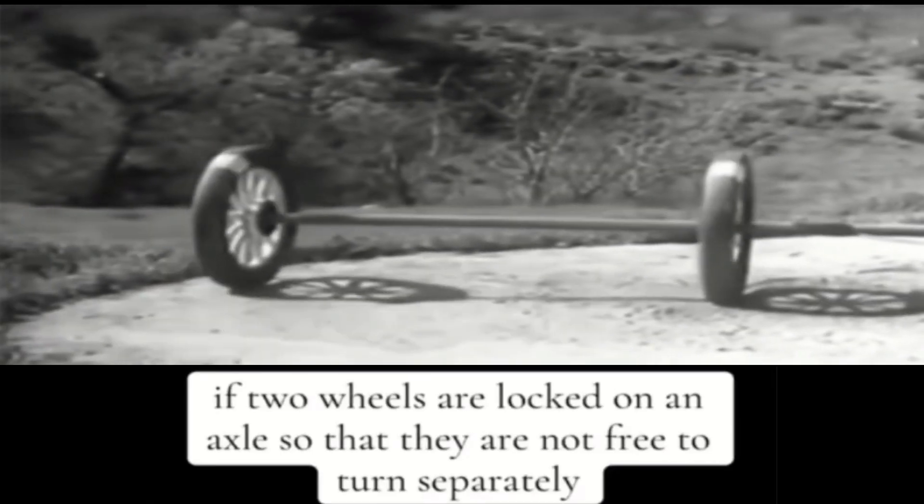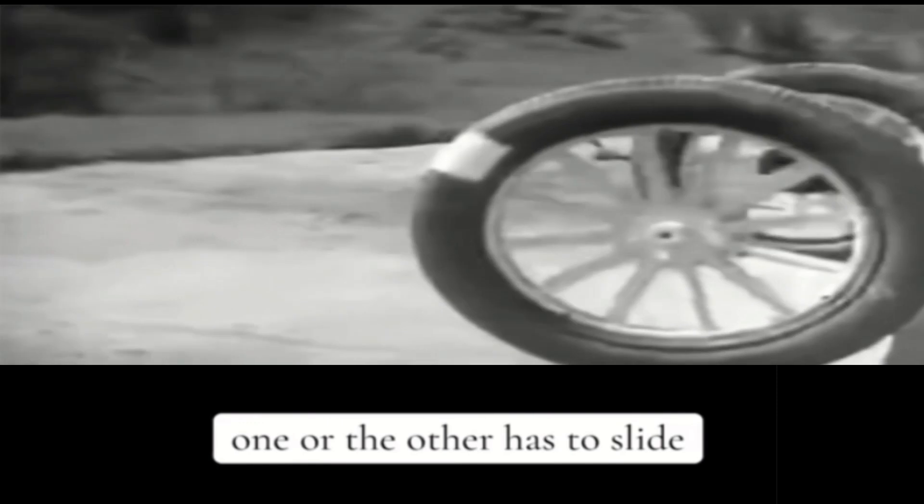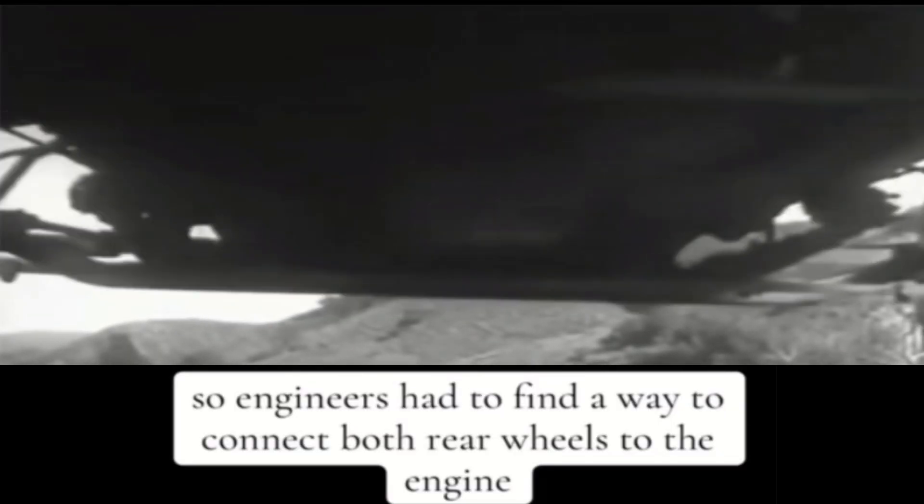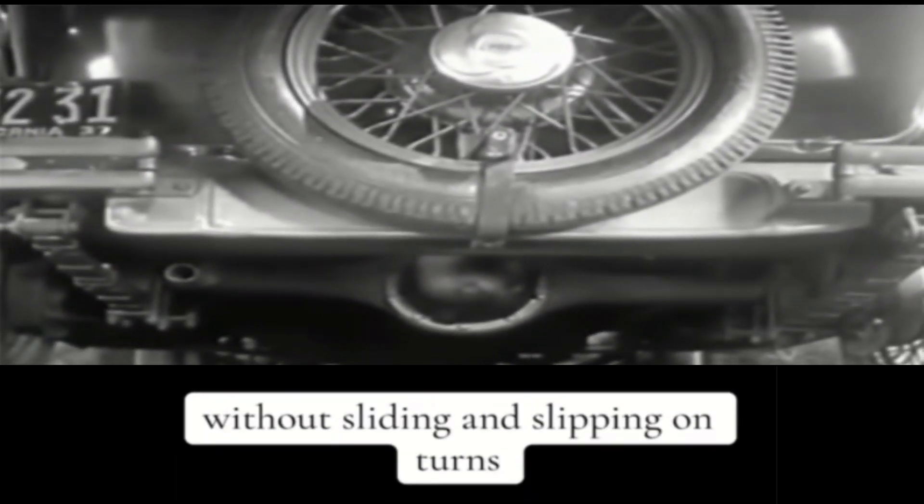If two wheels are locked on an axle so that they are not free to turn separately, one or the other has to slide. So engineers had to find a way to connect both rear wheels to the engine without sliding and slipping on turns.